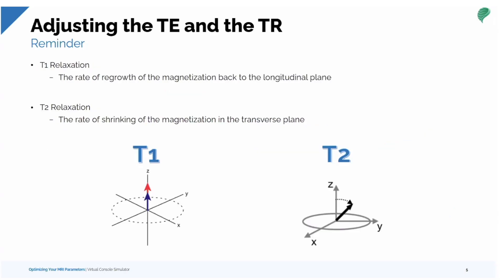Just a little bit of review to remind us about how contrast is formed. Two things occur when radio frequency is applied to excite protons in a magnetic field. The tissues go through two rates of recovery simultaneously. The first is called T1 relaxation, which is the rate of regrowth of magnetization back to the longitudinal plane — along the magnetic field. And we have T2 relaxation, which is the shrinking of the magnetization in the transverse plane, where our coils are.